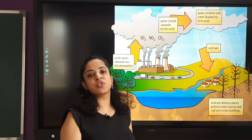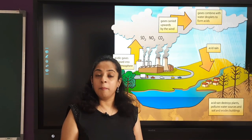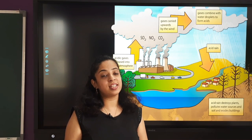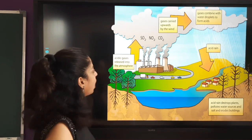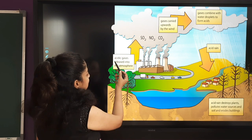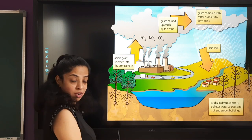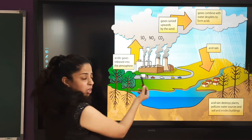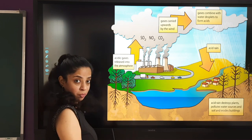Acid rain is generally caused due to pollutants in the air — basically pollutants like sulfur dioxide and oxides of nitrogen. The acidic gases are released into the atmosphere from factories, from burning of fossil fuels, or from the fuels of automobiles.